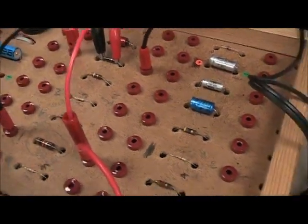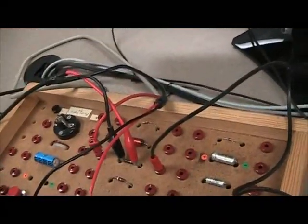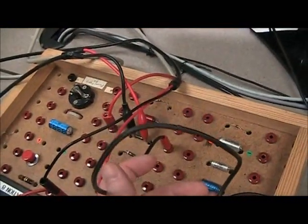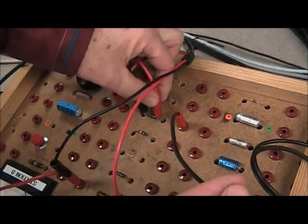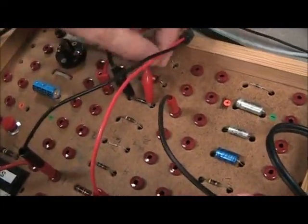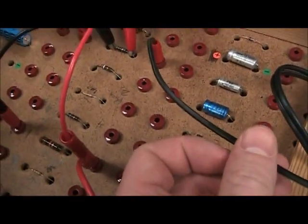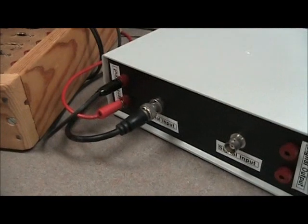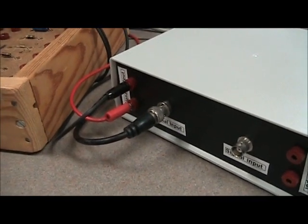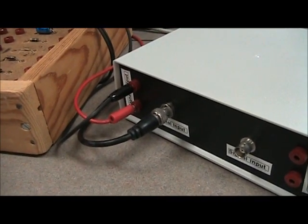Here it's important that the 1.5k resistor—the positive side should be the red side of the connector and the negative side should go back to ground on the amplifier. If you have it backwards, it grounds the signal and you get nothing on the output.